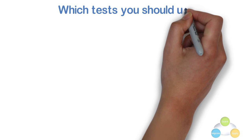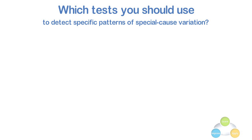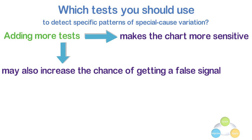Which test you should use to detect specific patterns of special cause variation? Apply certain tests based on your knowledge of the process. If it is likely that your data might contain particular patterns, you can look for them by choosing the appropriate test. Adding more tests makes the chart more sensitive, but may also increase the chance of getting a false signal. When you use several tests together, the chance of obtaining a signal for lack of control increases. As this is a very critical concept, I am taking a little time to explain the control chart so that you can understand it in a better way.